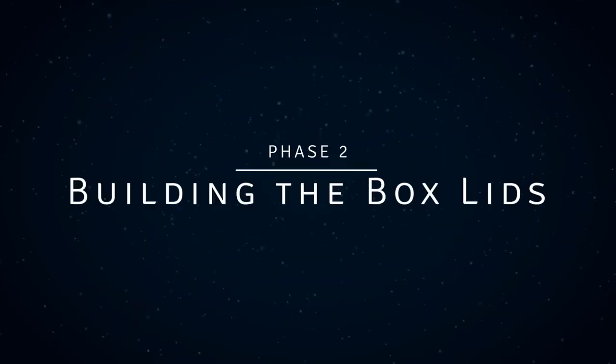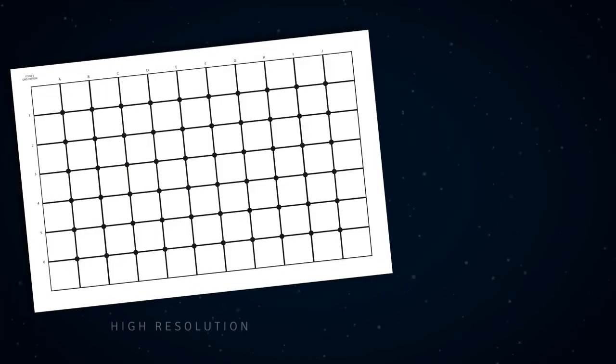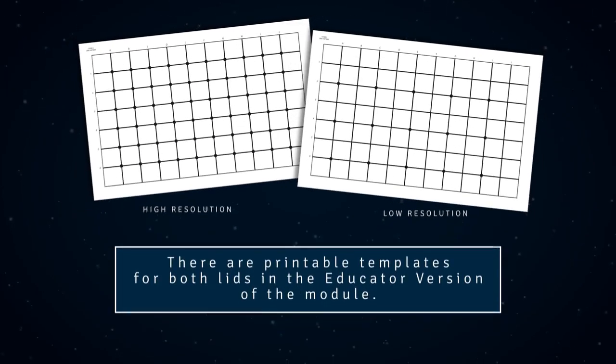Moving on, let's build box lids. Each box will have two lids, high resolution and low resolution. There are principal templates for both lids in the educator version of the module.